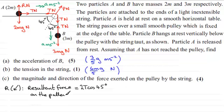So it's just a question now of substituting our values in. And we've got then two times the tension. The tension we found out in part B was 6mg over 5. And we now multiply it by the Cos 45 degrees. And working in exact mode, Cos 45 degrees is 1 over root 2.